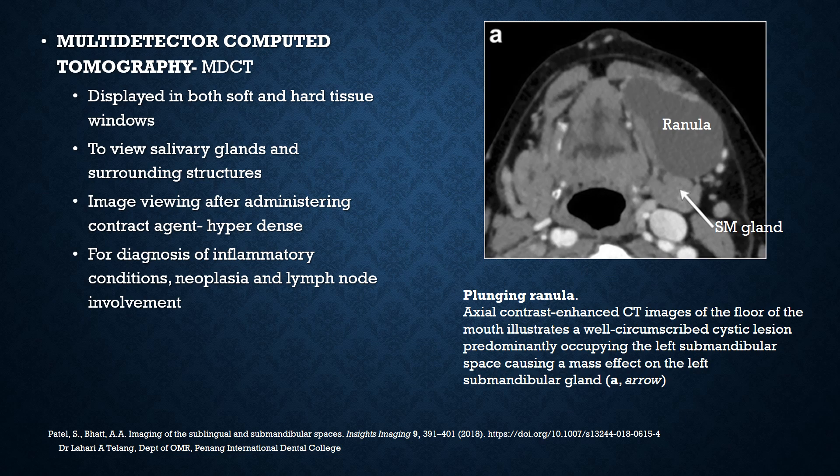This is a case of a plunging ranula, a large space-occupying mass seen on the floor of the mouth. It is a well-circumscribed cystic lesion predominantly occupying the left submandibular space, causing a mass effect on the submandibular gland. You can see that the gland has been pushed to one corner by the large plunging ranula.